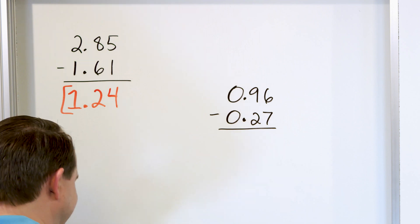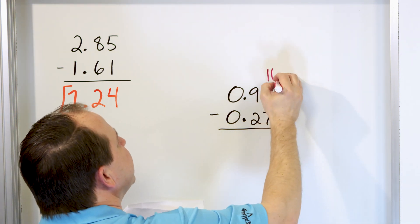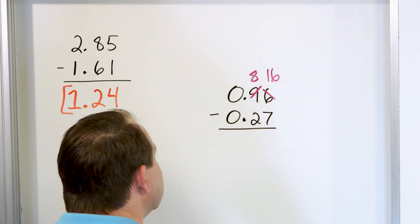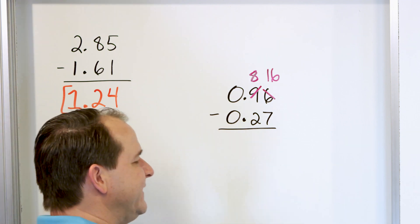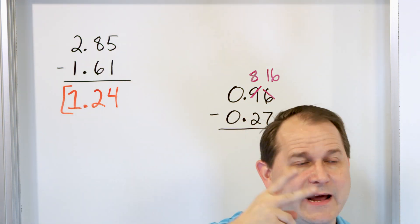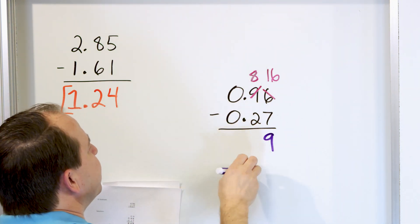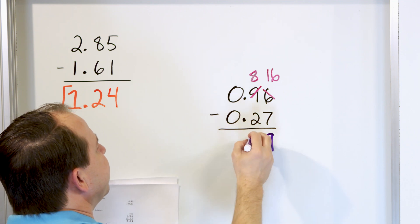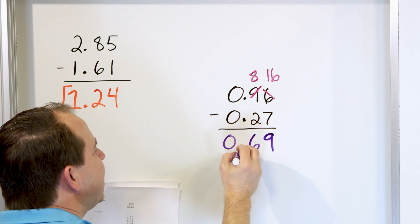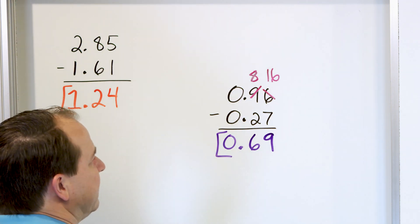Start on the right. What is 6 minus 7? Well, you can't do that — 6 is not big enough, so make it a 16 and borrow here to make that an 8. 16, let's go down by 7: 15, 14, 13, 12, 11, 10, 9. We land on 9. 16 minus 7 is 9. 8 minus 2 is 6, and 0 minus 0 is 0, and the decimal point falls right out of the problem: 0.69.